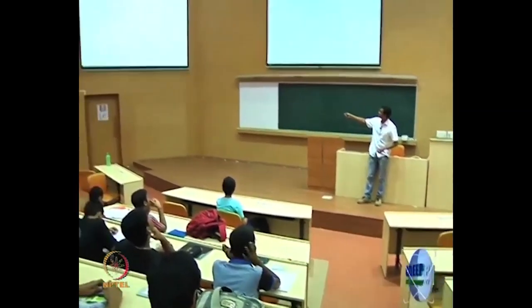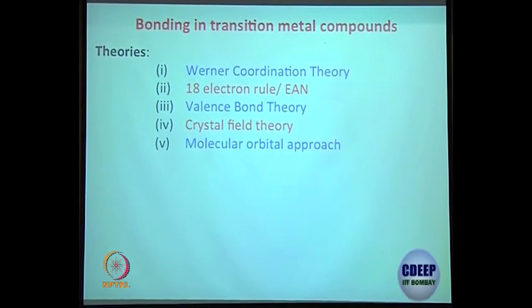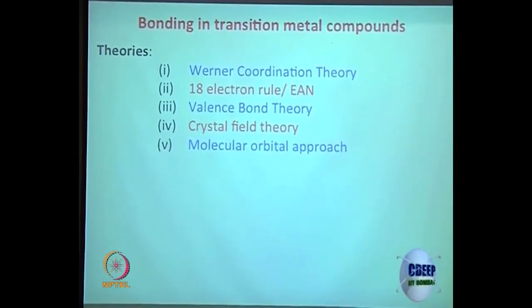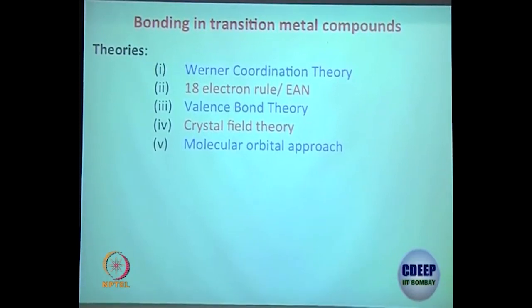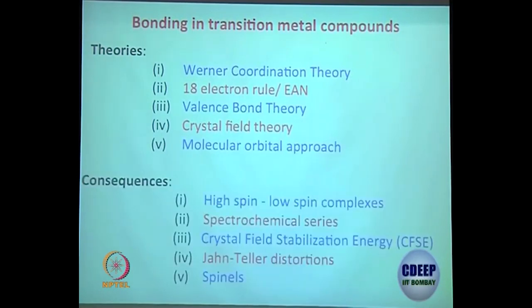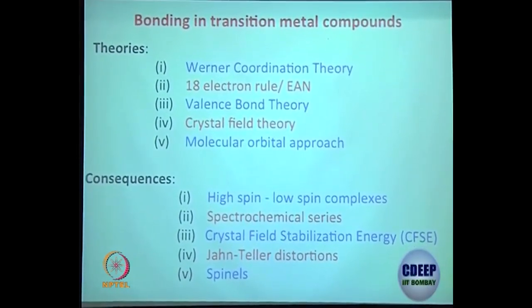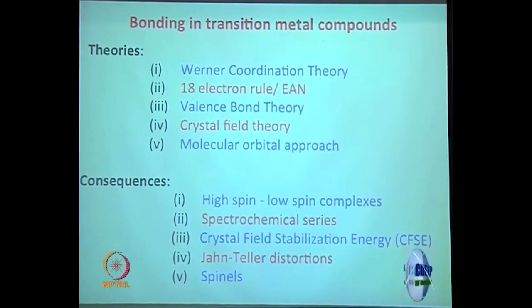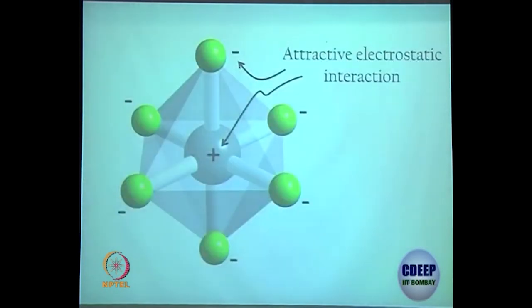In the last class we were discussing Werner coordination theory, the 18-electron rule, valence bond theory — how good it is and how bad it is — and how good crystal field theory is. We will not get too much into the molecular orbital approach. The major objective for this chapter is to give you an idea about high spin and low spin complexes, the spectrochemical series, crystal field stabilization energy, Jahn-Teller distortion, and spinel — the last two topics we will discuss today.